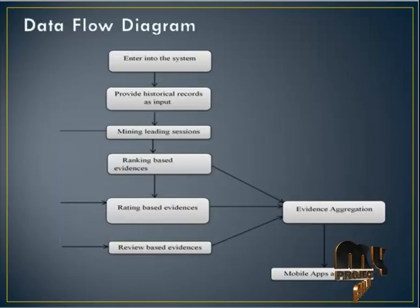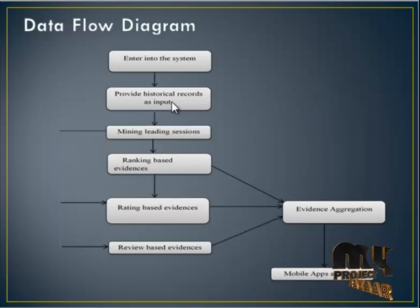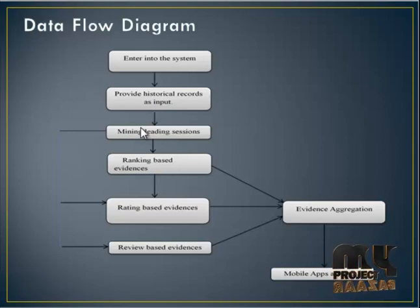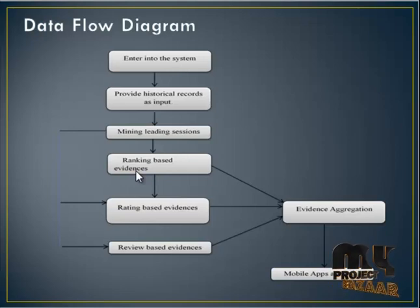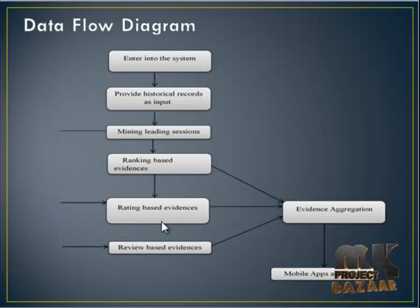The data flow diagram of our process: first, data enters the system where we provide the historical request — that is, the user review dataset about the mobile apps. First we do mining based on the dataset. Next, we do ranking based on evidence from the identification. Then it goes to rating-based evidence and review-based evidence — so rating and review.